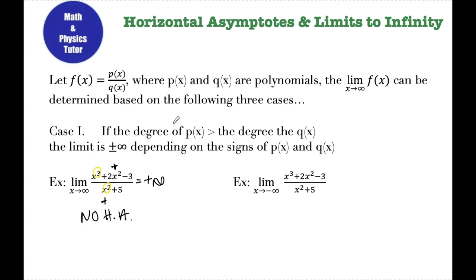If the function is shooting up to positive infinity, that means there's no horizontal asymptote. So in this first case, when the degree of the numerator is greater than the degree of the denominator, there's not going to be any horizontal asymptote and your limit is going to be positive or negative infinity depending on the signs.